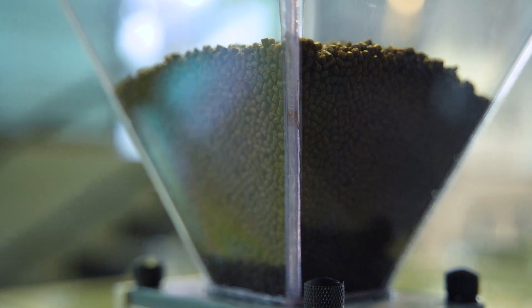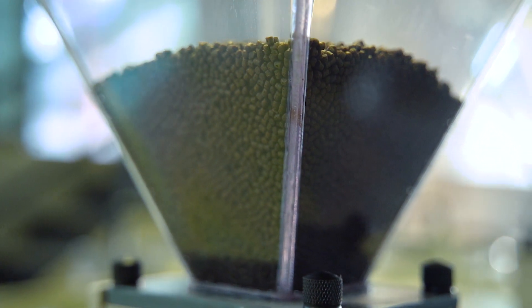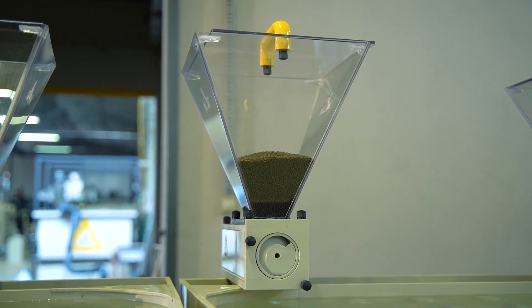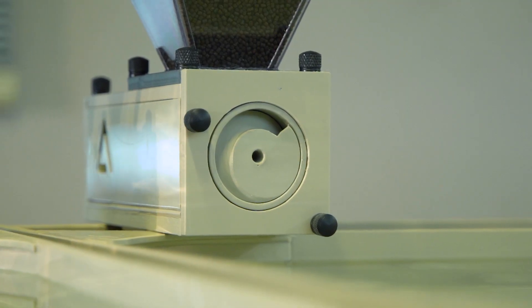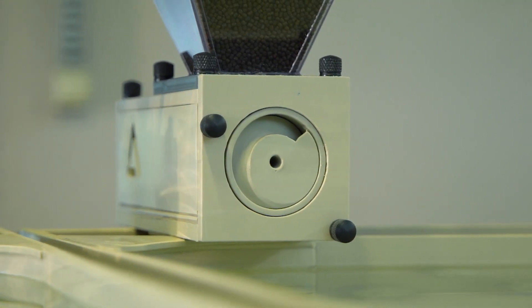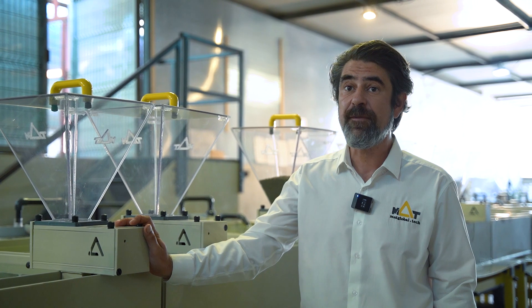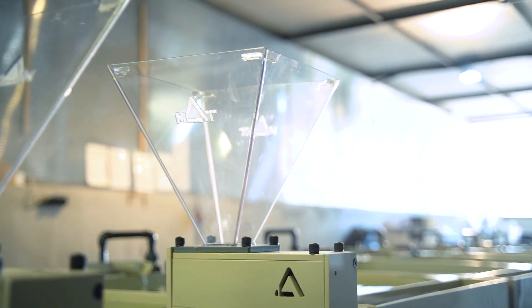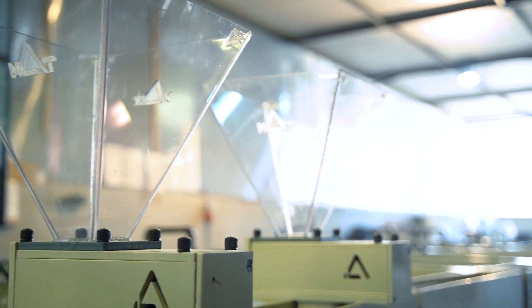Automatic feeders are commonly used in fish farming operations to provide numerous benefits. These devices are designed to efficiently dispense fish feed at scheduled intervals, reducing the need for manual feeding. There are several advantages of using automatic feeders in fish farms.